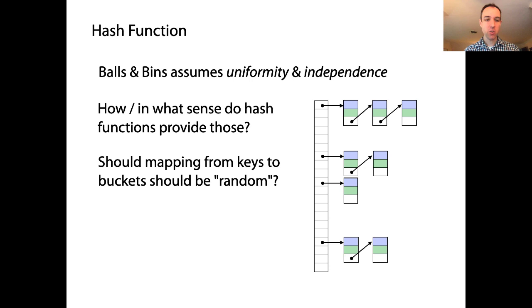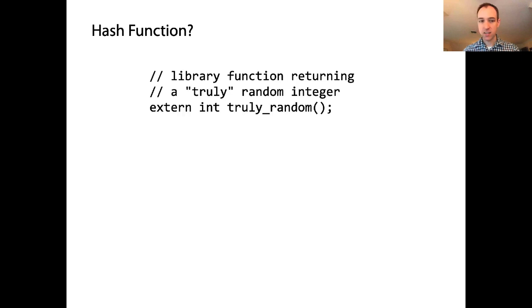Okay, so here's a question. Here's one idea for how we could design this hash function that's going to include randomness so as to make the allocations to different buckets random. Let's say it makes use of a library function called truly random, which goes and generates the best quality random number it possibly can. Maybe it's interrogating different chaotic processes that are going on in the world at any given moment, and combining several of them, and it's just going and getting as good randomness as we can possibly get.